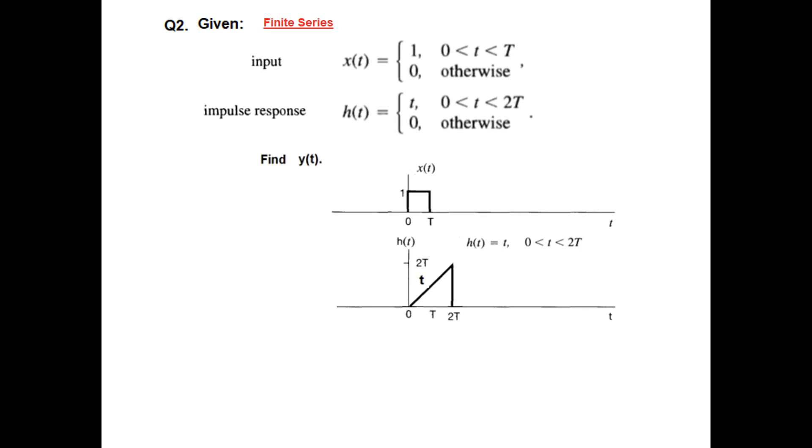Now, as we saw in the last problem, we flipped Ht and then we slid it towards right and found the overlapped area. In the book this is what has been done, but to me that looks to be very tough to understand and follow. So what I will do is that I will flip Xt because this is a simpler signal. Keep this in mind: whenever you are going to solve a problem, try to flip the simplest signal and drag that. And we can do that.